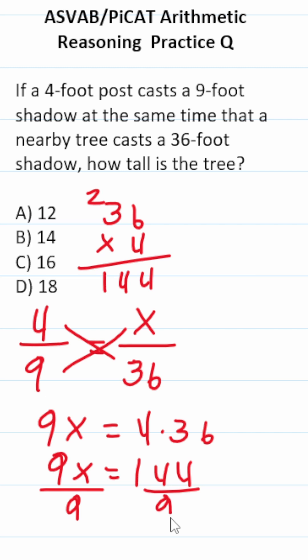Divide both sides by 9 to get x by itself. What is 144 divided by 9?